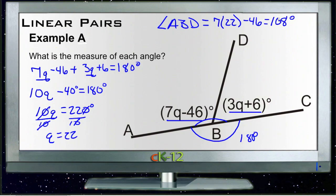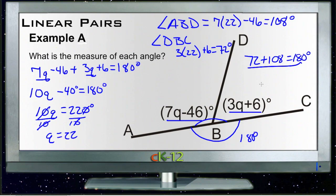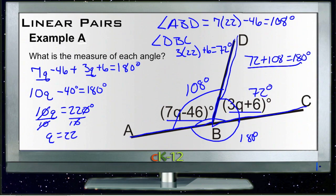Then angle DBC would be 3 times 22 plus 6, or 66 plus 6, 72 degrees. And since 72 plus 108 is 180, that tells us we got our answer right.